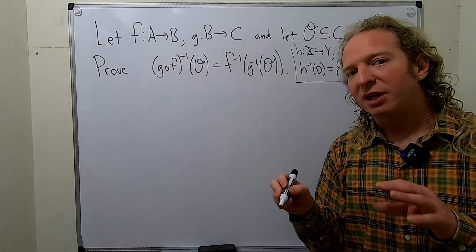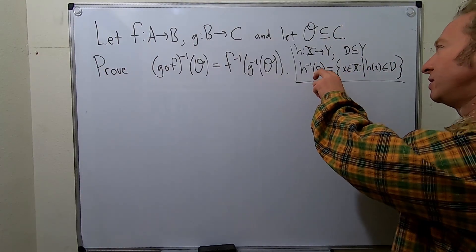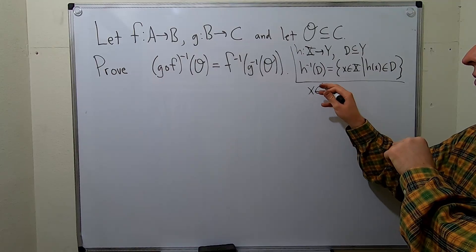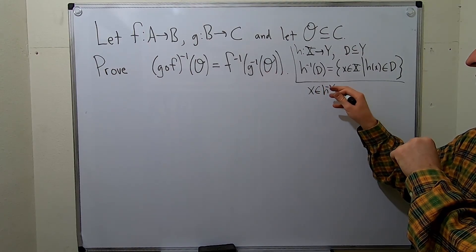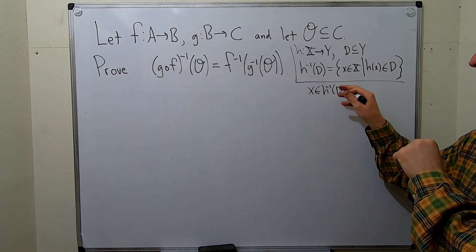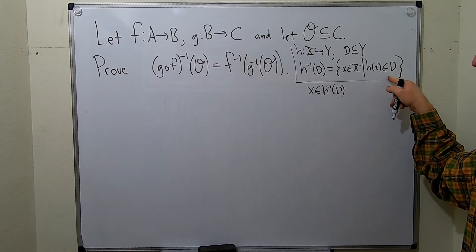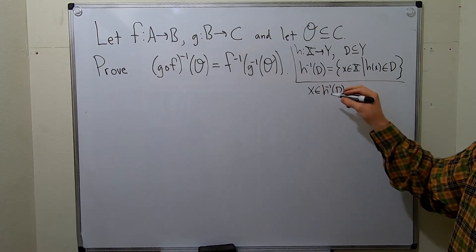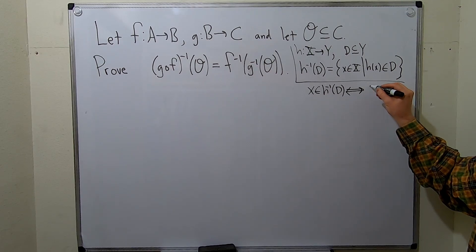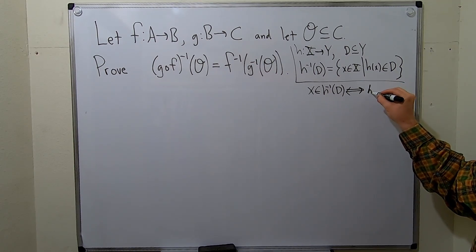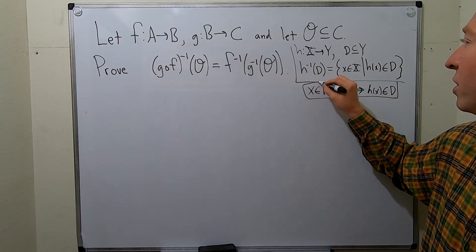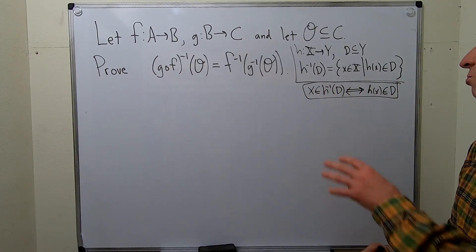In particular, let's write down exactly what it means for something to be in this set. So when you take an element in this set, if X is in the inverse image of D under H, that means that H of X is in D. Likewise, if H of X is in D, then X is in the set. So this is equivalent to saying that H of X is in D. So I'm going to put this in a box because we're going to use this extensively in the proof.